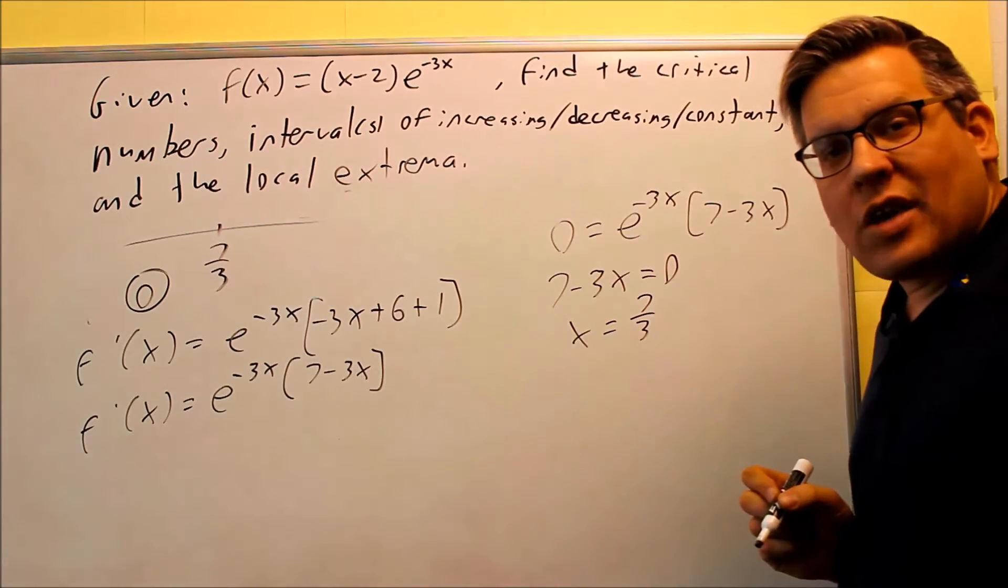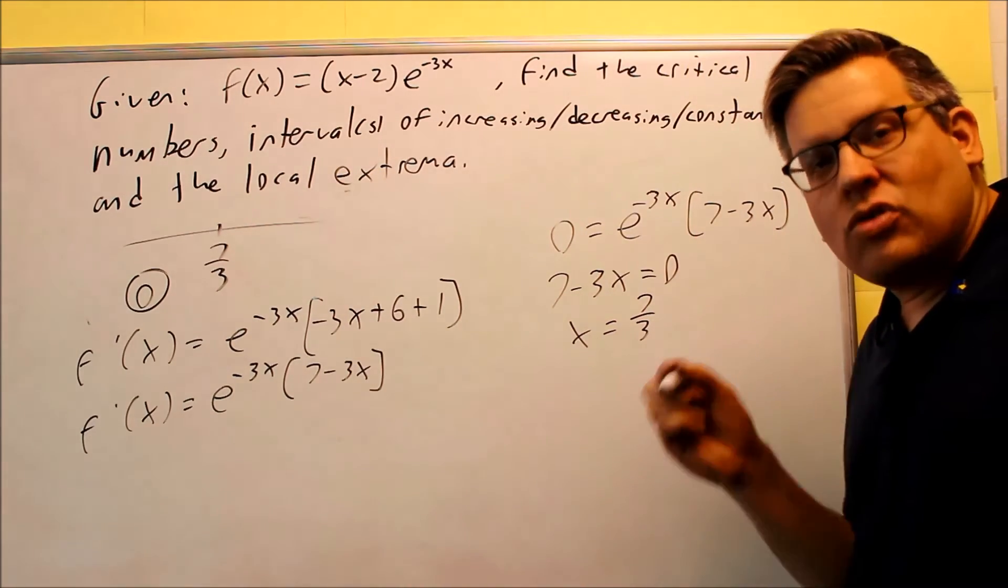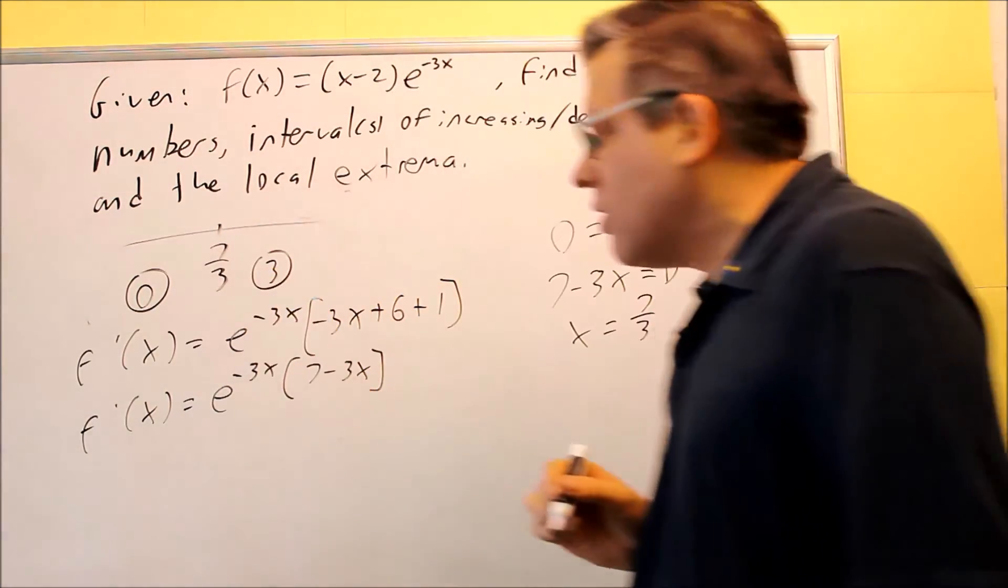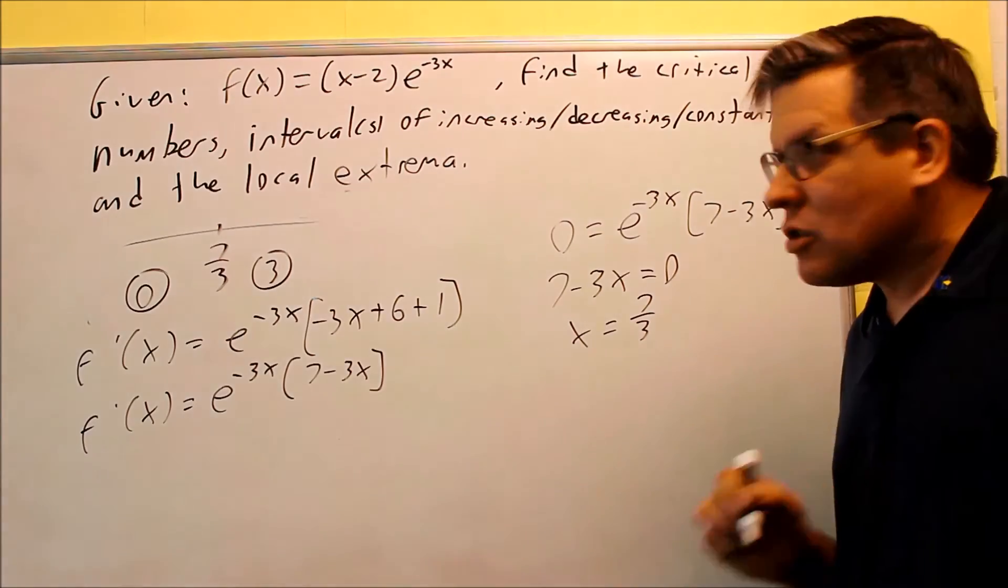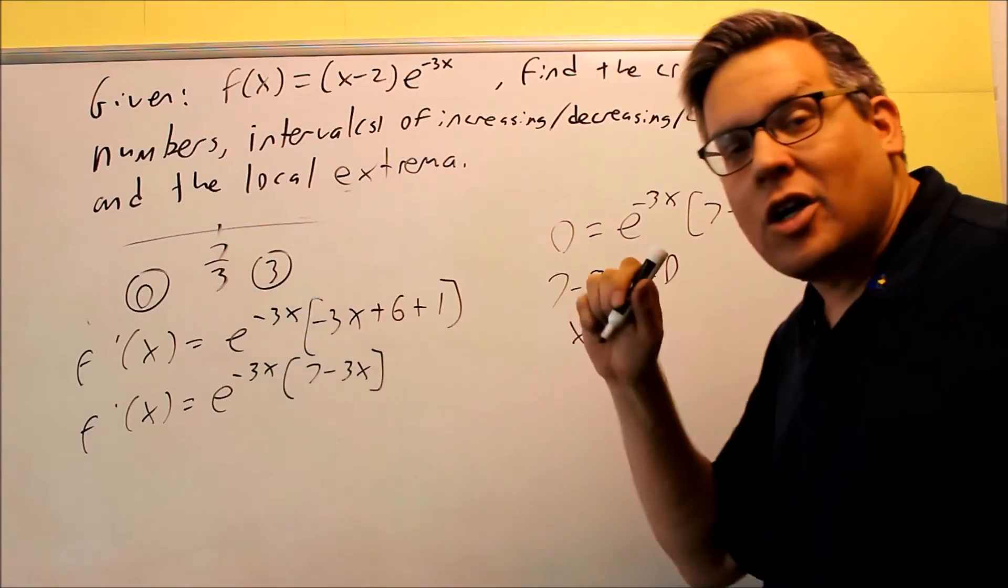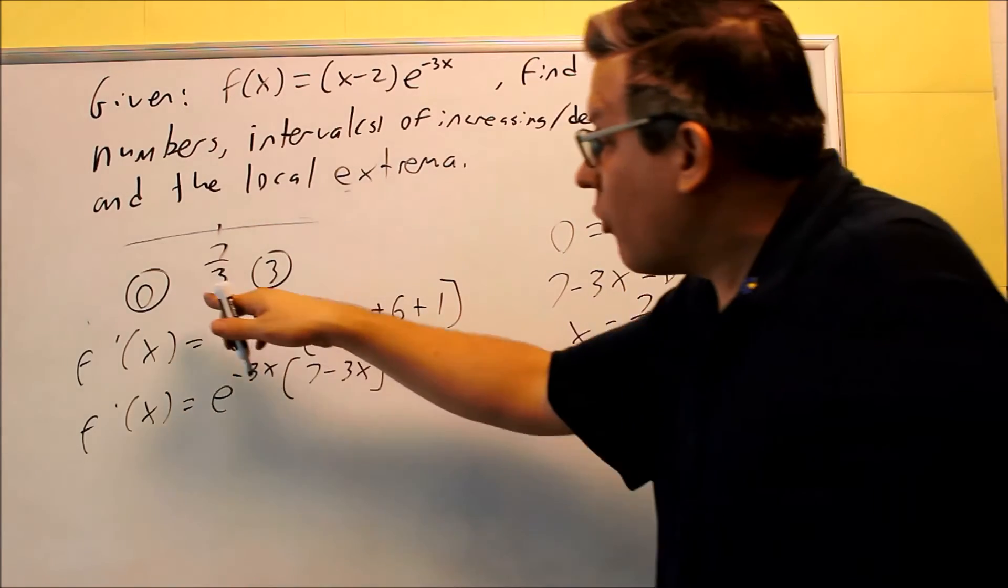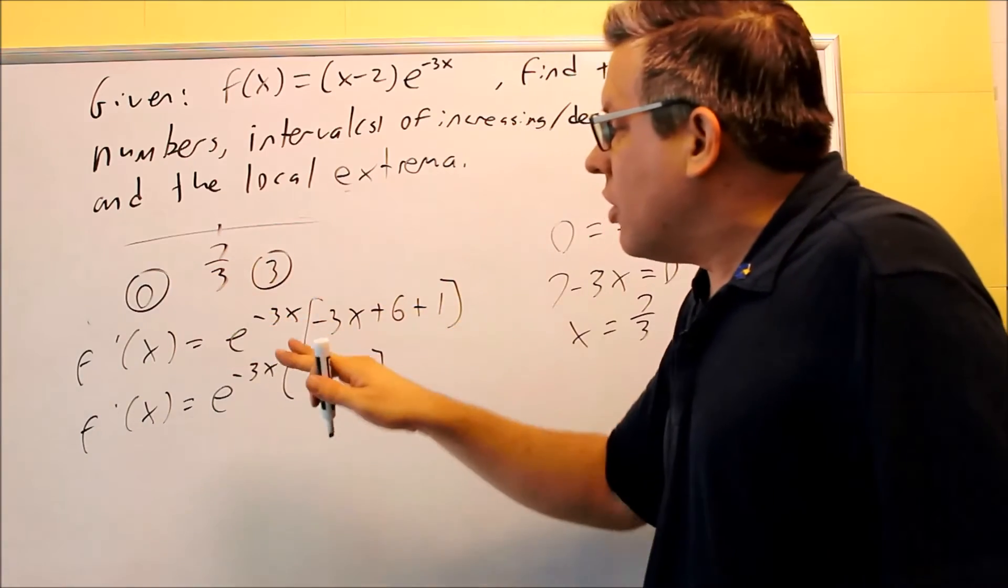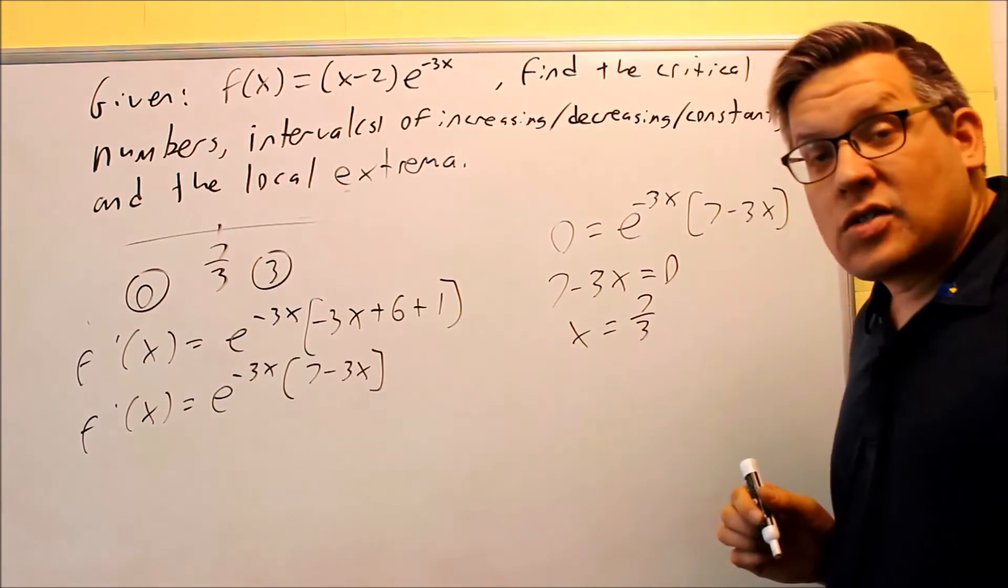Now the other number I want to check is I want to look at the number 7 thirds. Now 7 thirds is 2 and 1 third. So therefore I don't want to use 2 here, I want to use 3. The most common mistake I see is people pick the wrong number. They don't pick one that's in the right interval and that way you'll get the answer wrong if you do it that way, because 2 would actually give you an interval in this region here. You want one on the other side of 7 thirds.